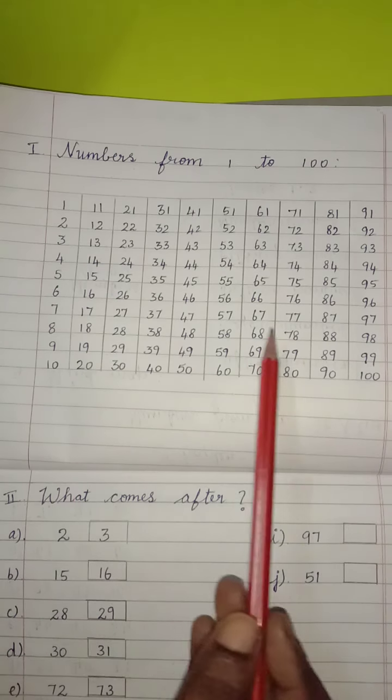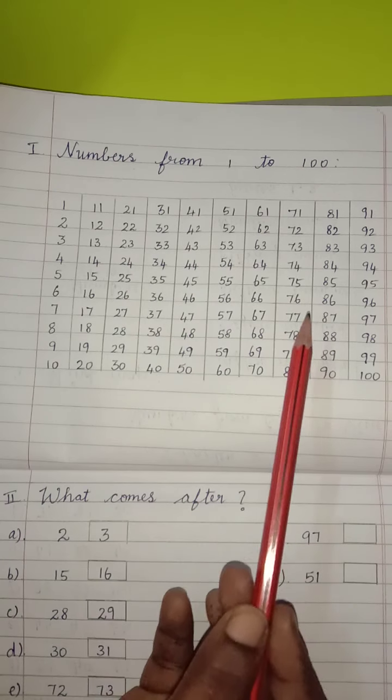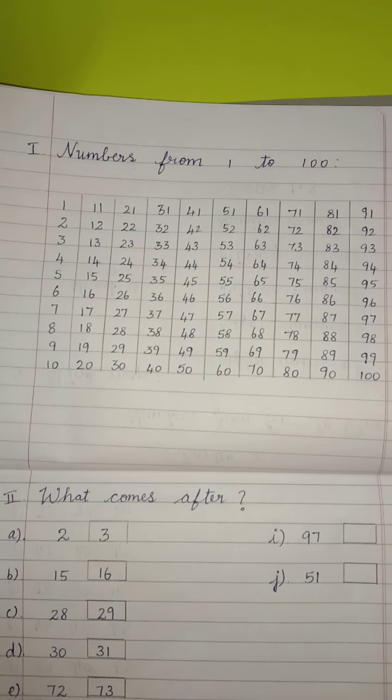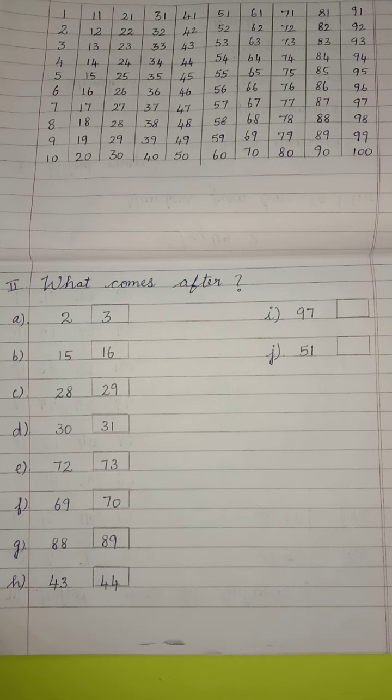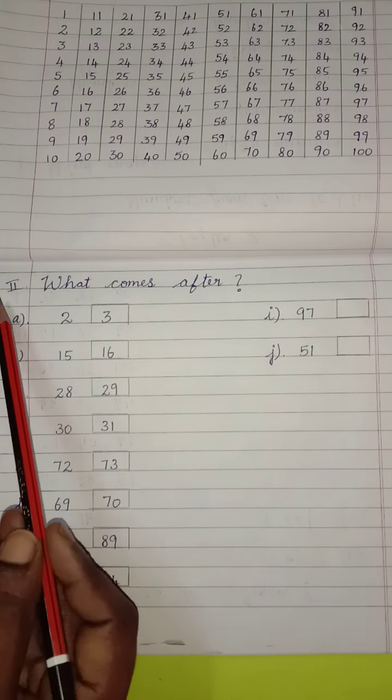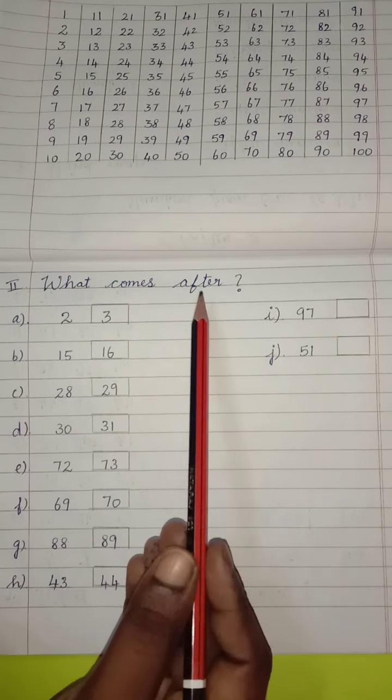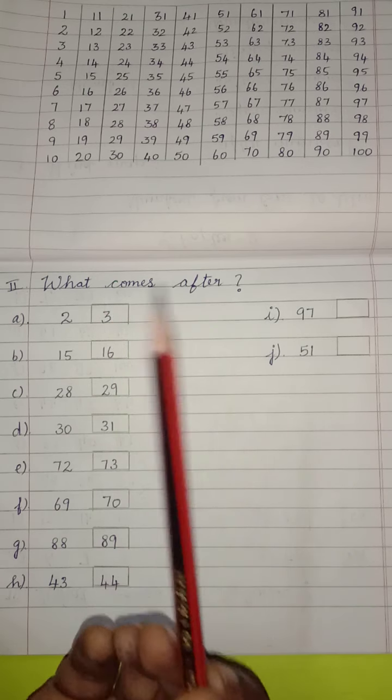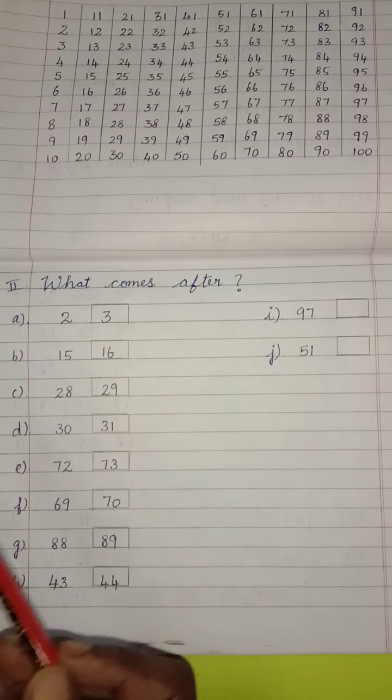So write your handwriting neatly, children. Children, use a scale to draw a line. Children, then come to Romalator 2. What comes after? So here you are going to write after number.